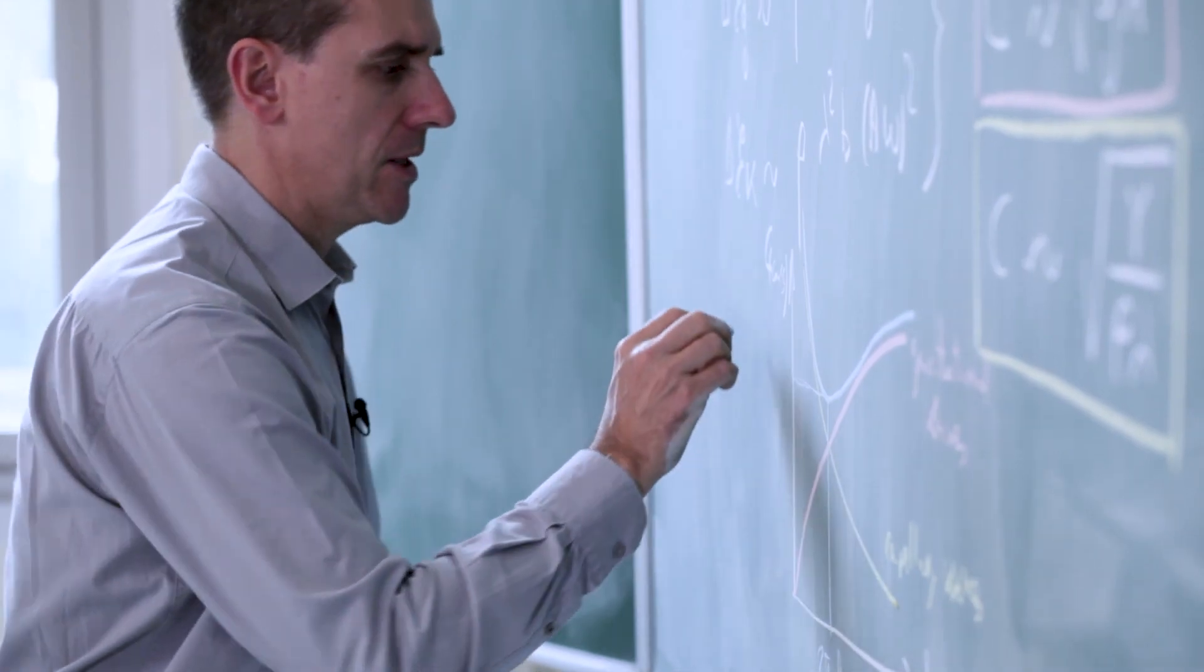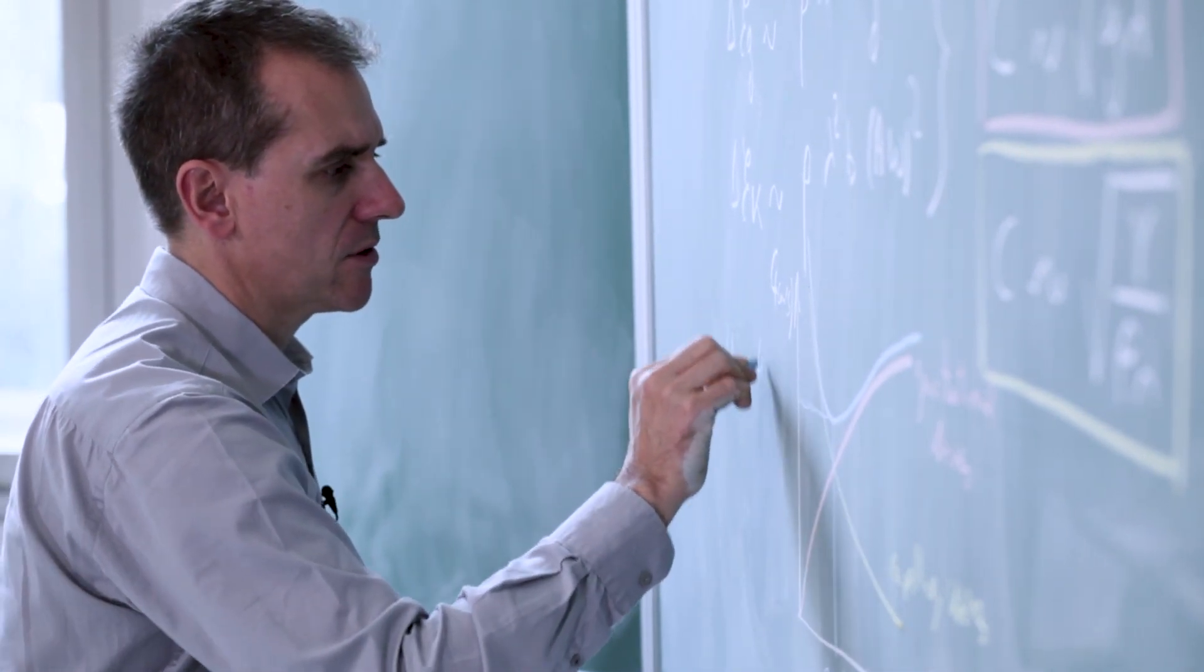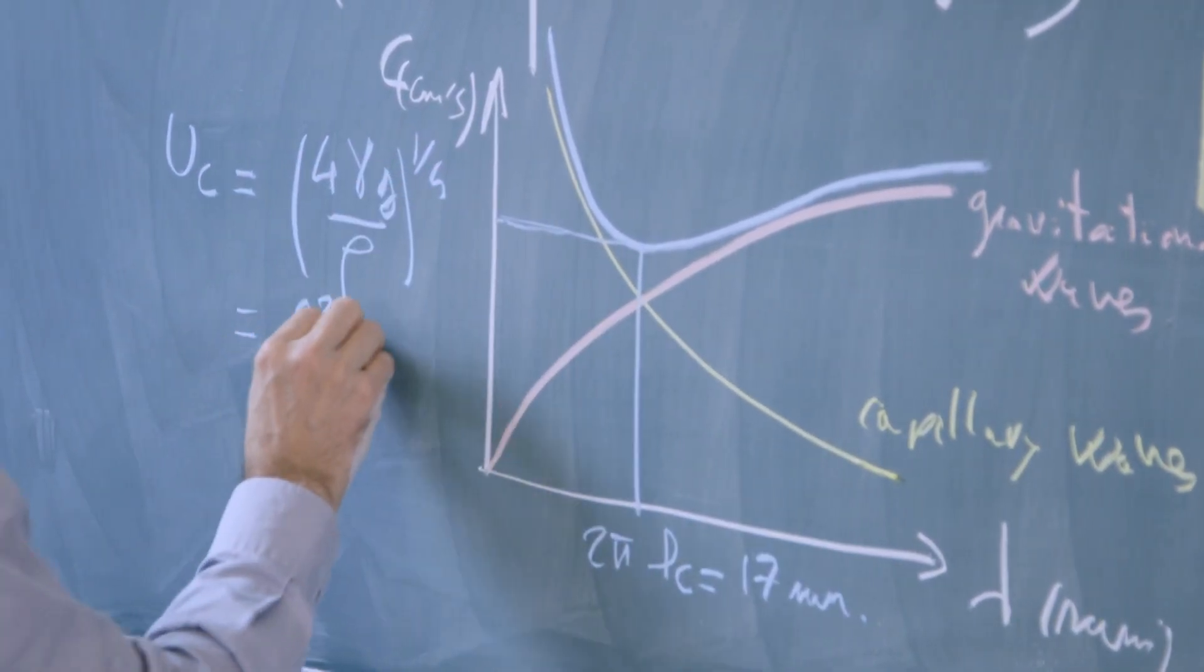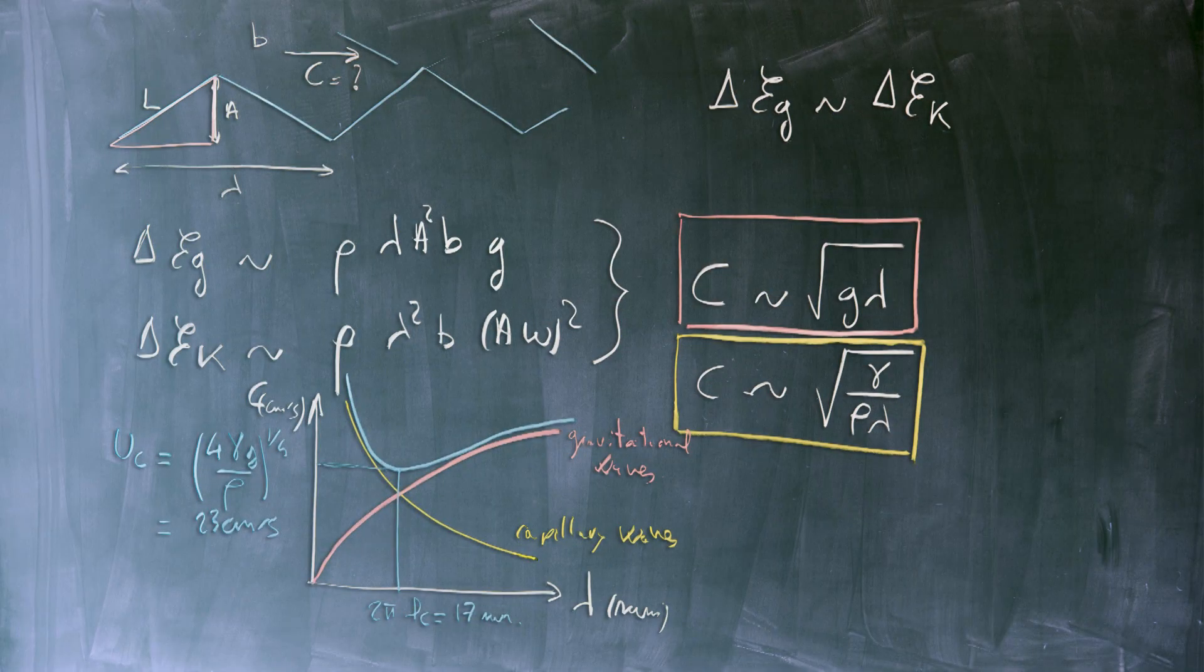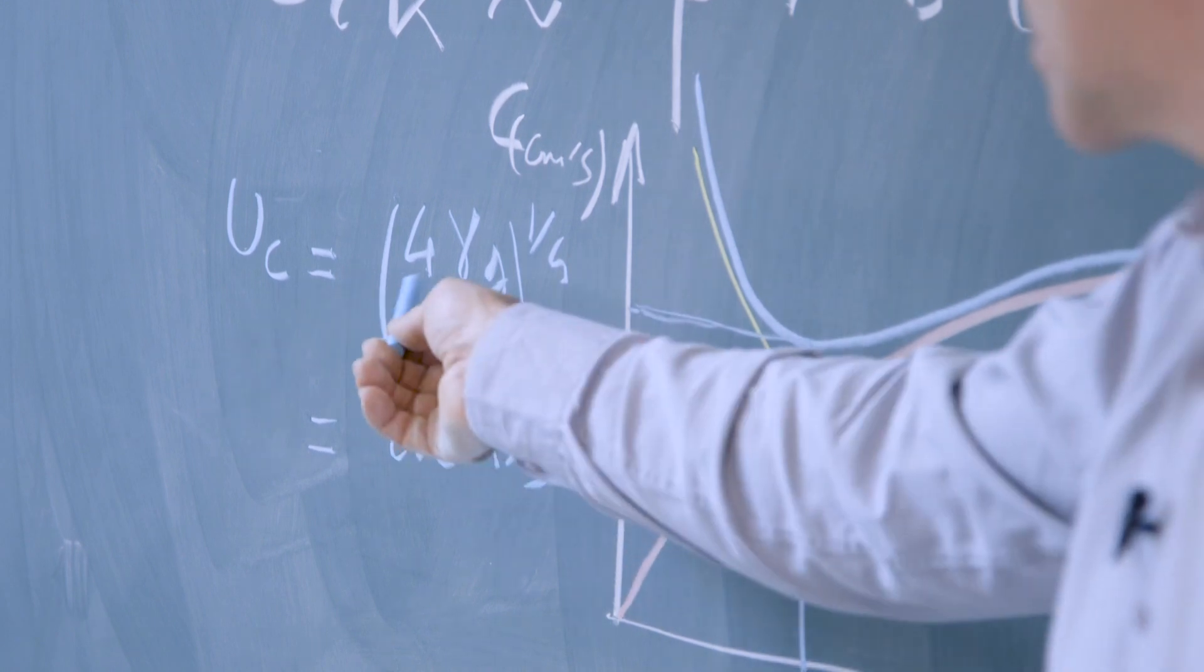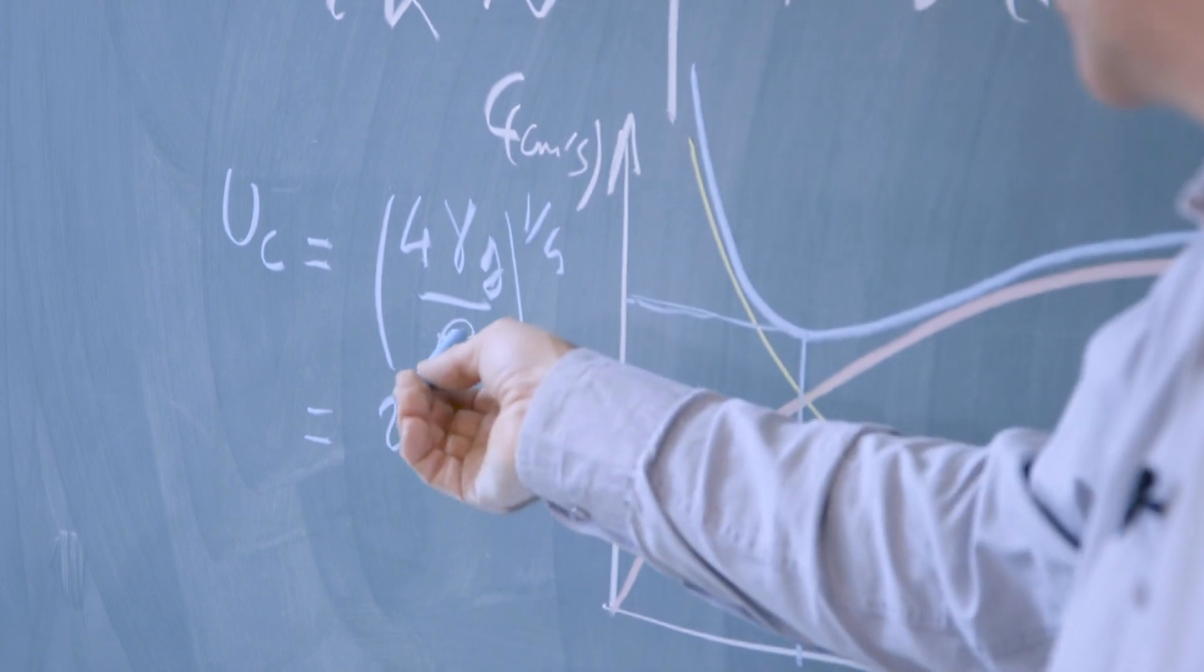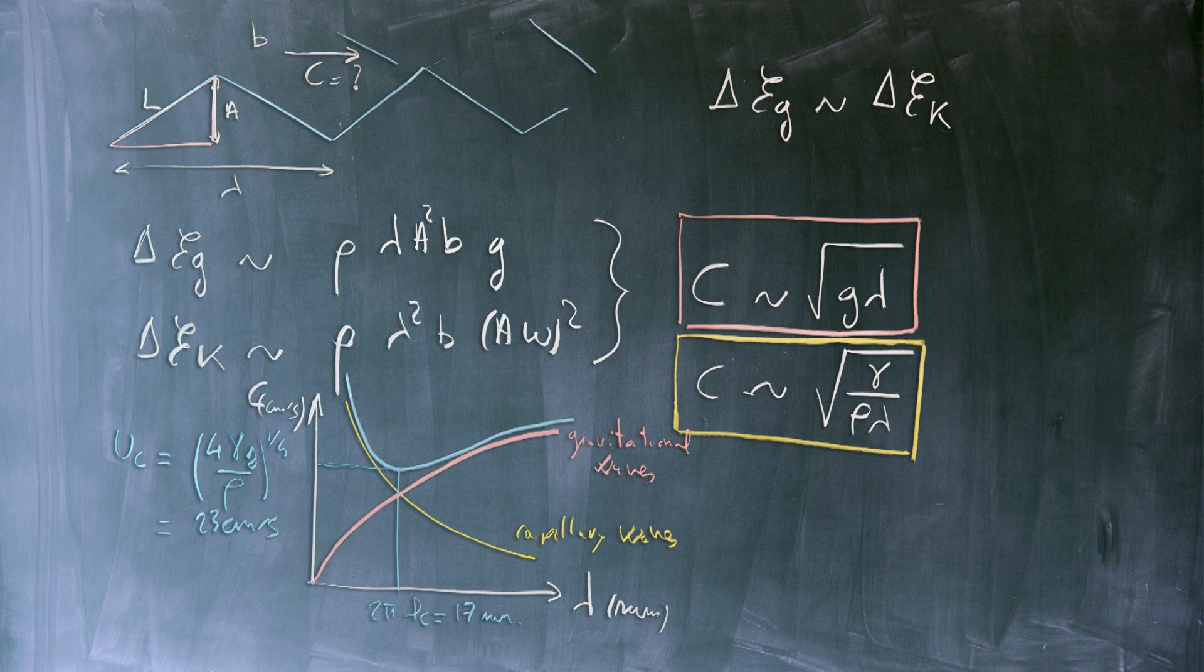This minimum is obtained for a lambda equal to 2 pi times the capillary length, which is 17 millimeters. And it also has a minimum velocity here, which is the one that we have observed in the experiment. You see it goes like 4 times gamma times g divided by rho to the power one-fourth. And this is equal to 23 centimeters per second. And now we understand that indeed at the surface of water, below 23 centimeters per second, we cannot find waves. And the critical velocity below which this happens is this one. It only depends on surface tension, the gravity field of the planet on which we work, the density, and that's it, to the power one-fourth. This gives us the critical velocity.